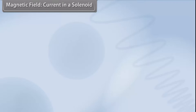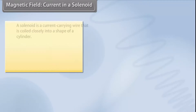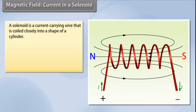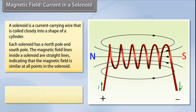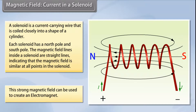A solenoid is a current carrying wire that is coiled closely into the shape of a cylinder, with the turns as close together as possible. This is similar to a bar magnet — each solenoid has a north pole and a south pole. The magnetic field lines inside a solenoid are straight lines, indicating that the magnetic field is similar at all points inside the solenoid.